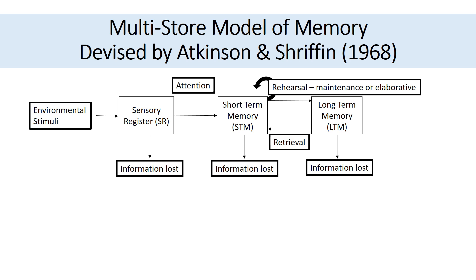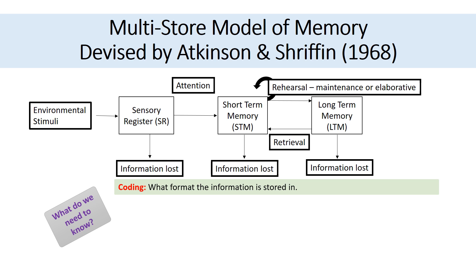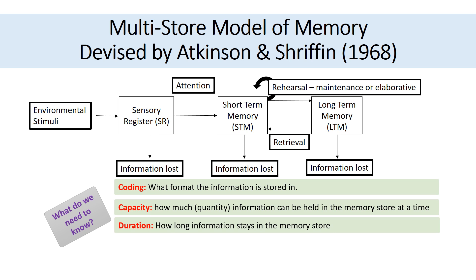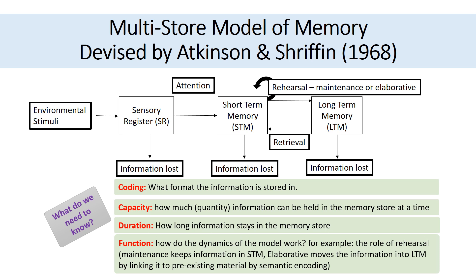So that's the diagram. You really need to know how this diagram is set out and how information flows through it, so practice drawing it out a couple of times. What do we really need to know about the multi-store model of memory? We need to know how it's coded — what format the information is stored in at each store — the capacity, meaning how much information can be held in each memory store at any one time, and the duration, meaning how long information stays in each memory store. We also need to know the function of each stage: how attention, rehearsal, retrieval, and information loss at each stage works.